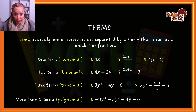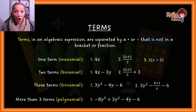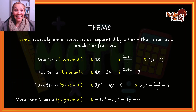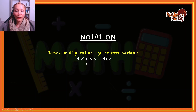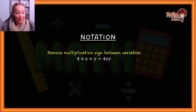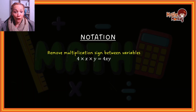Before we actually look at an exercise, I want to quickly show you one more thing — tips on how we express or write certain things with algebra. If I'm saying four times x times y, the quicker way to write it in algebra is just 4xy. When you see a number and variables next to each other without any operations in between — and operations are plus, minus, divide, times — you assume it's multiplication. So 4xy actually means four times x times y.